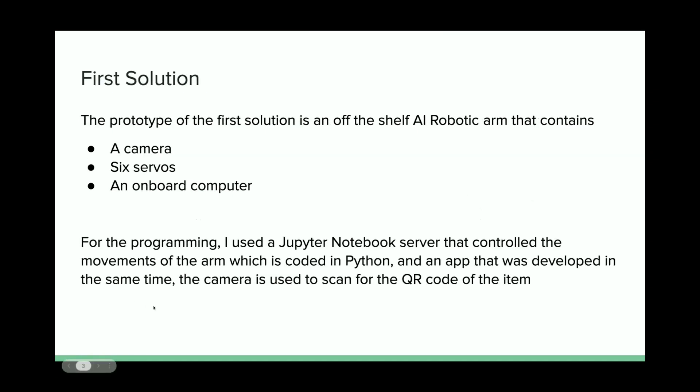My first solution: the prototype of my first solution is an off the shelf AI robotic arm that contains a camera, six servos, and an onboard computer. For the programming, I used a Jupyter Notebook server that controls the movements of the arm, which is coded in Python, and an app that was developed at the same time. The camera is used to scan for the QR code of the item.